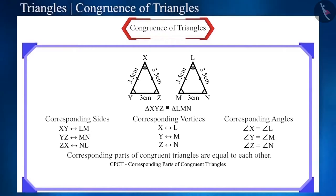Note an important point here that triangle XYZ is congruent to triangle LMN. But, if we write this as triangle XYZ is congruent to triangle MNL, then it would be wrong because there is a one-to-one correspondence between both the triangles.